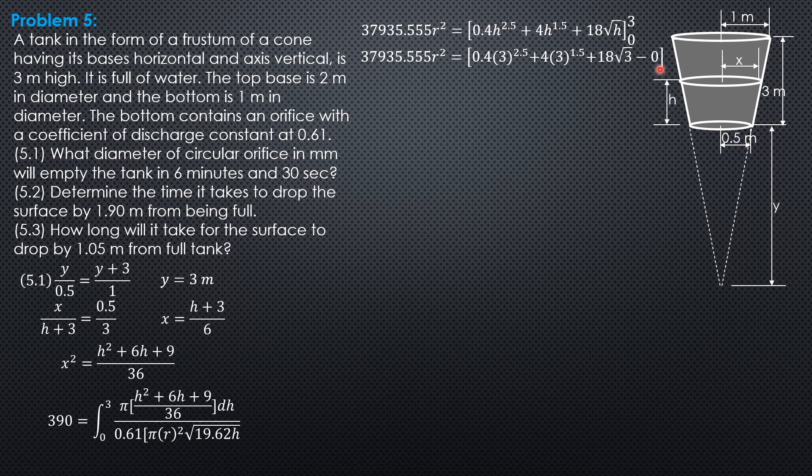So time equals integral from 1.1 to 3 of pi H squared plus 6H plus 9 over 36 over 0.61 pi 0.03917 squared square root of 19.62 H. So cancel out pi, then we compute the constant 1 over 36 divided by quantity 0.61 times 0.03917 squared times square root of 19.62. The constant is 6.70056. Then the integral is the same as that. We'll just copy except for we have limits from 1.1 to 3. So time therefore is 6.70056.